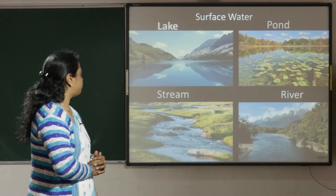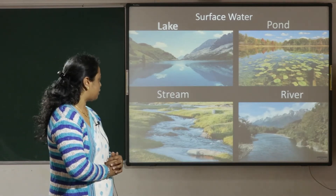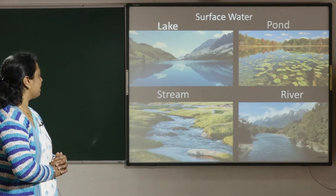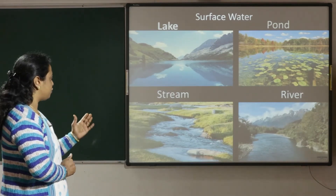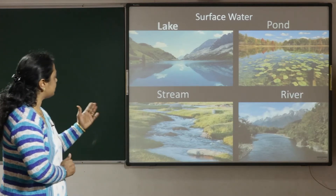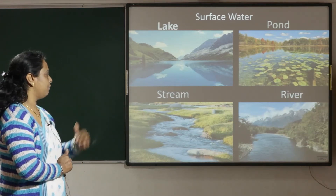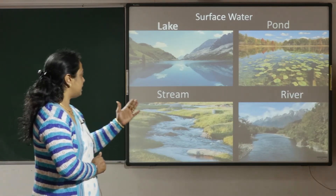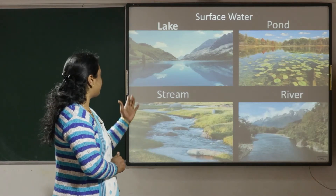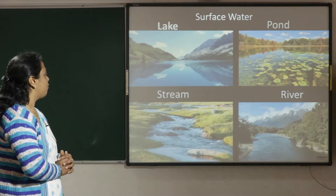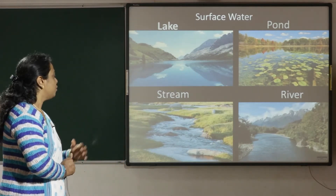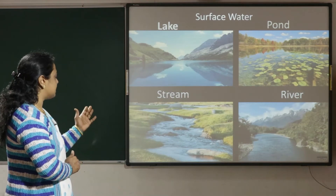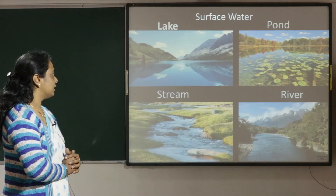A stream is a natural flow of water moving across the country between banks, which is smaller than a river. A river is a stream of water which flows through a channel in the surface of the ground.